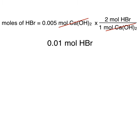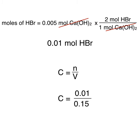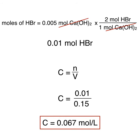Now that we know the number of moles of hydrogen bromide and have the volume from the problem, we can once again use the equation c = n/v. Substituting our known information gives a value of 0.067. Thus, the concentration or molarity of the hydrogen bromide solution is 0.067 moles per liter.